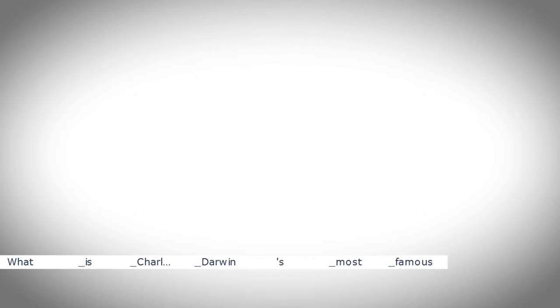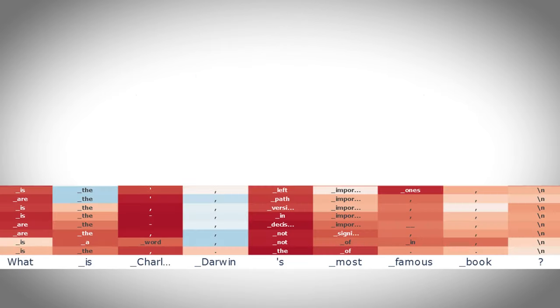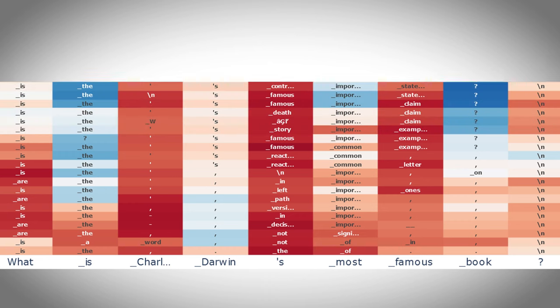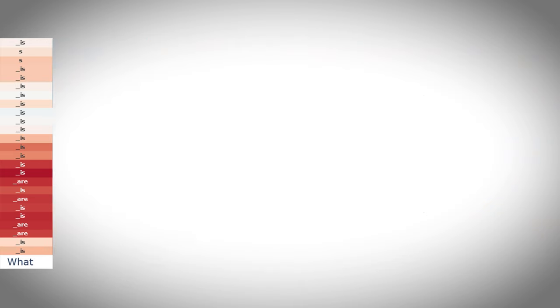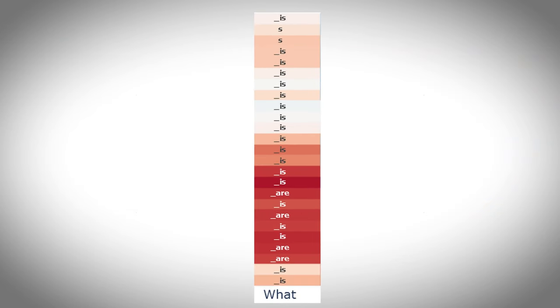The computations for each word are happening in parallel to each other. The following visualization of this process shows which next word is expected at each processing step for each word in parallel. Let's look at one column in this graph.